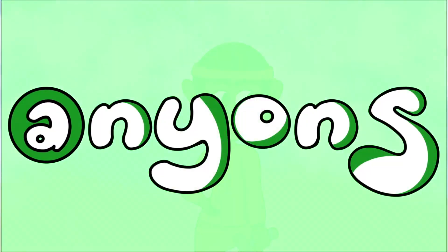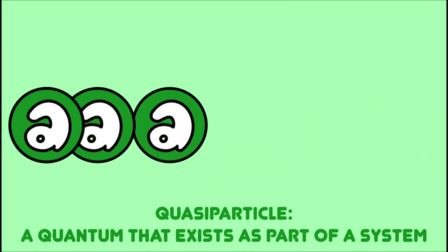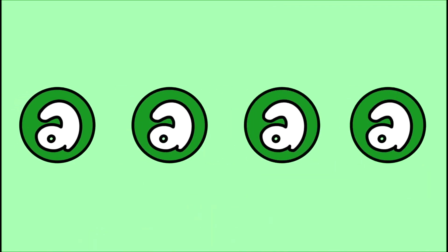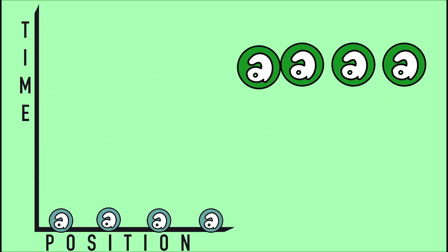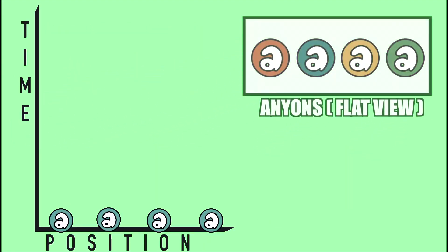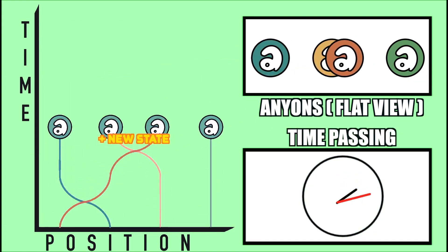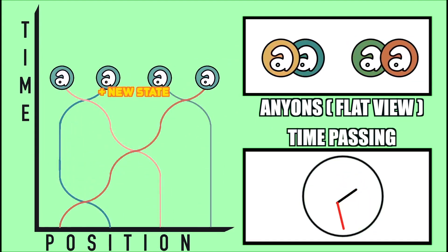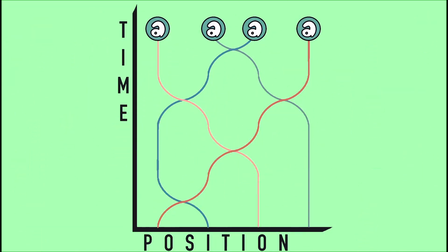Anyons are two-dimensional quasi-particles, and the state of an anyon system is determined by how those particles are spatially configured. Thus, swapping particle positions creates a distinct new state. If we graph the position of these anyons versus the passage of time, we see their world lines begin to braid. If you were to encode information into the system, then each braid constitutes an operation.